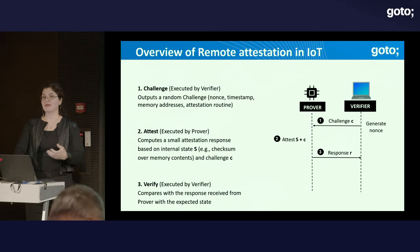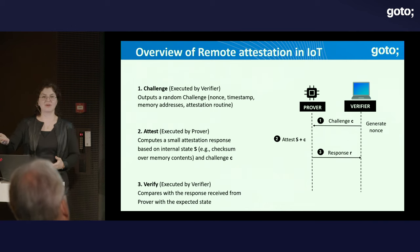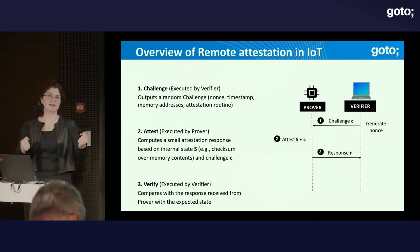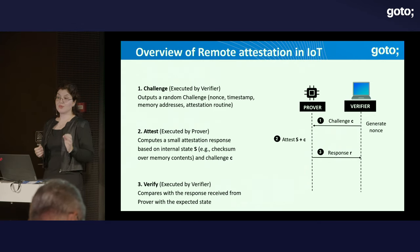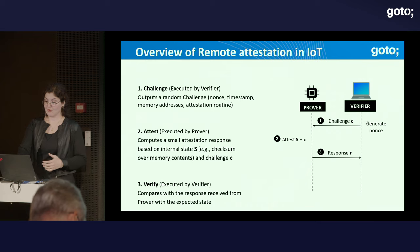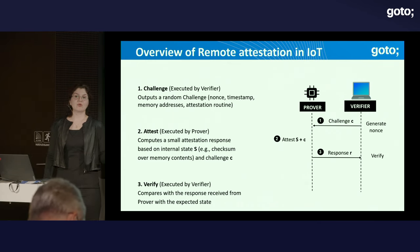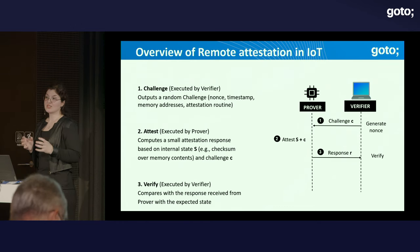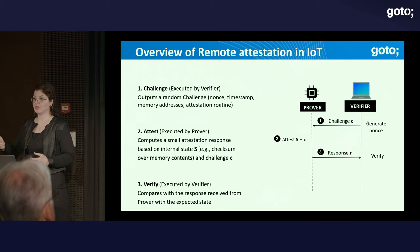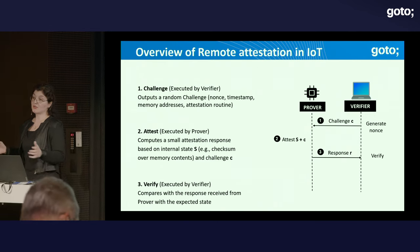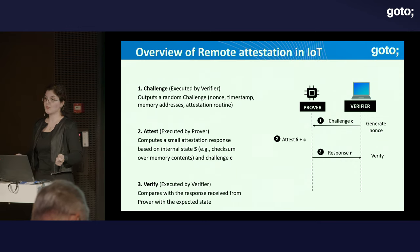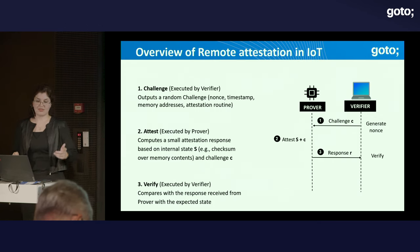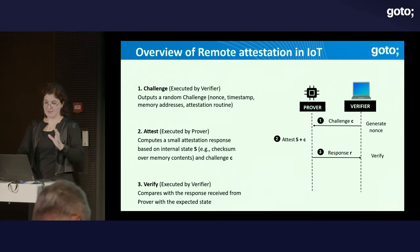It's very important to remember that attestation does not say anything about what happened to the device one second before or after attestation. In the typical scenario, attestation establishes trust only at that moment — I can say the device is trusted right now. But maybe after attestation it will be compromised, or maybe the malware removed itself before attestation. So it establishes trust only in that moment. Of course, there are approaches to extend this, but that is the typical scenario.